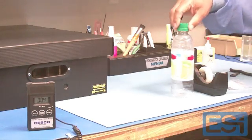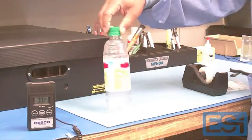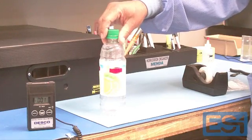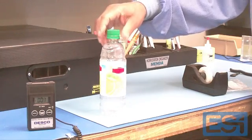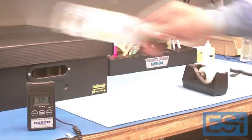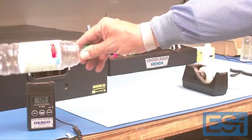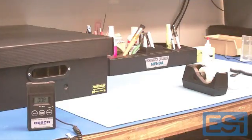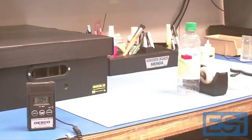Another seemingly harmless item is a water bottle or a bottle that contains some juice or liquid of some type, especially now during the summer months. And we can see we have 5000 static volts charged up on the outside of the plastic water bottle.